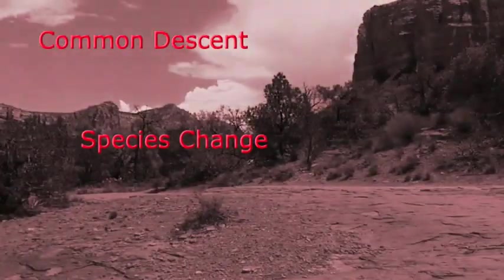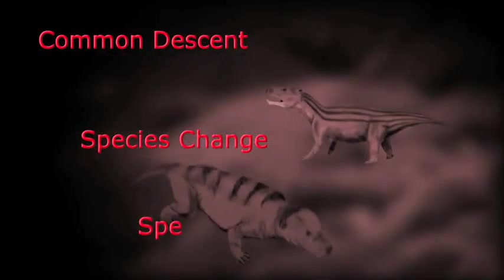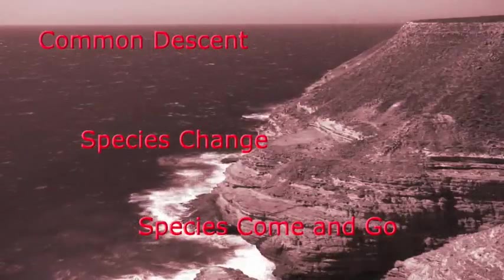Changes within a single species occur, so-called microevolution. Species themselves come and go, so-called macroevolution.